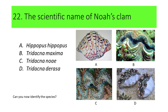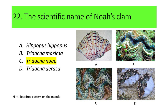Can you now identify these species? If not, here's another hint. This species has a teardrop pattern on the mantle. If your answer is C or Tridacna noe, you are correct. Tridacna noe is also called Noah's clump.